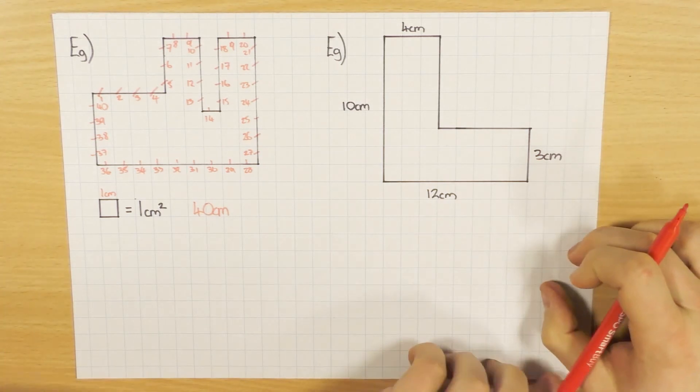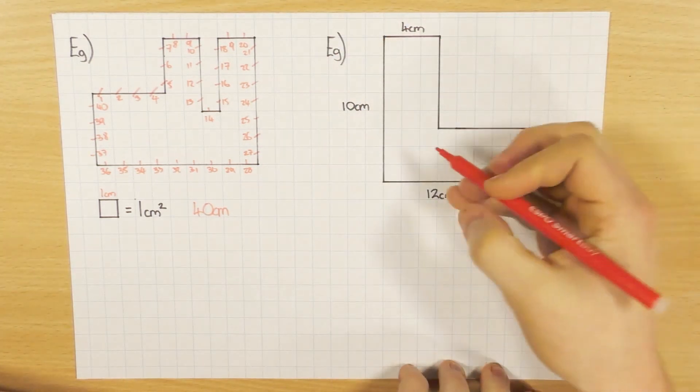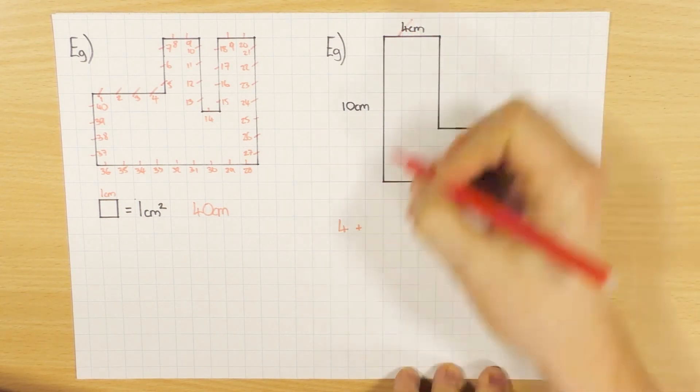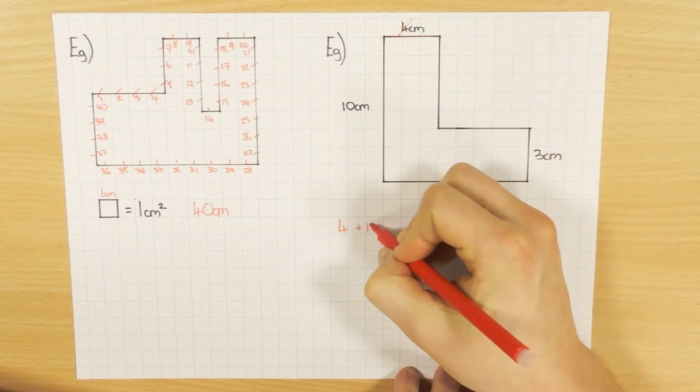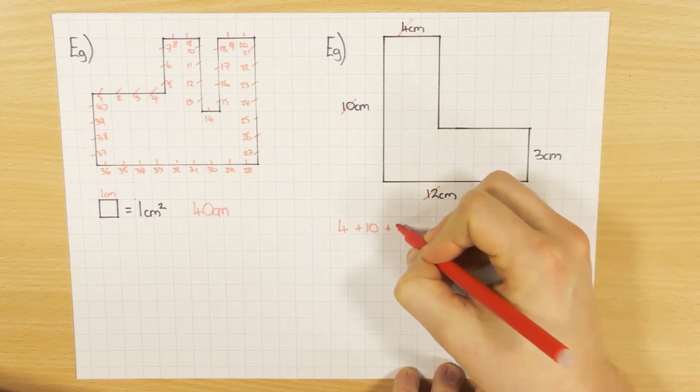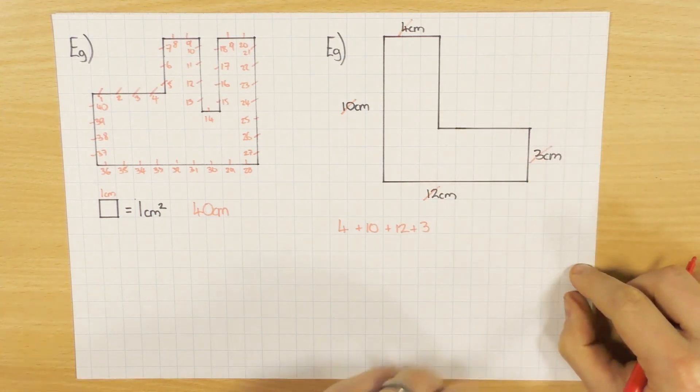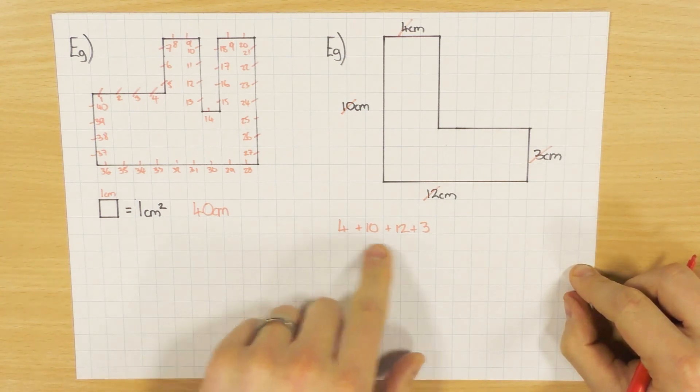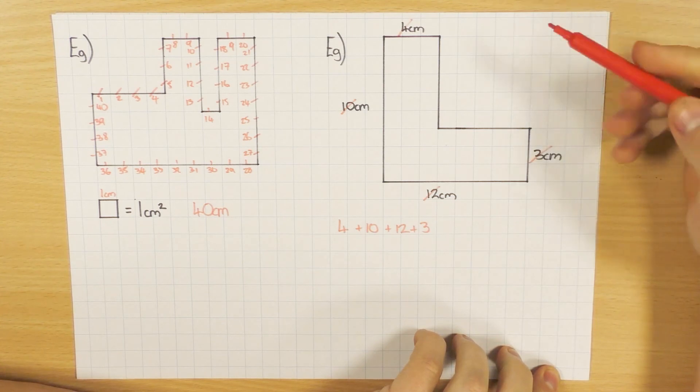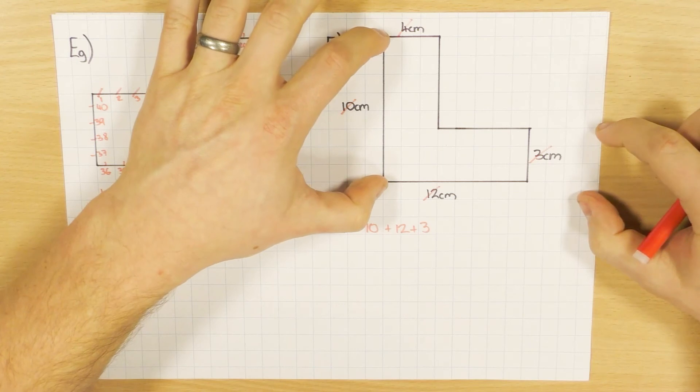This is a slightly different question where you have lengths. Start wherever you like - I'll start with 4. Going around the shape: 4, 10, 12, and 3. This is where people go wrong - they forget about these two sides. But you must work them out. Look at the total height of the whole shape, which is 10cm. This part is 3cm, so to work out this side: 10 take away 3 is 7cm.